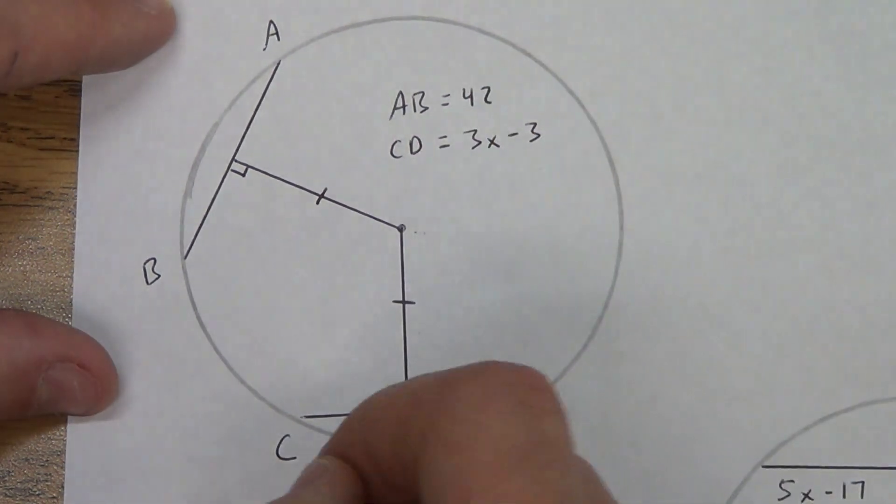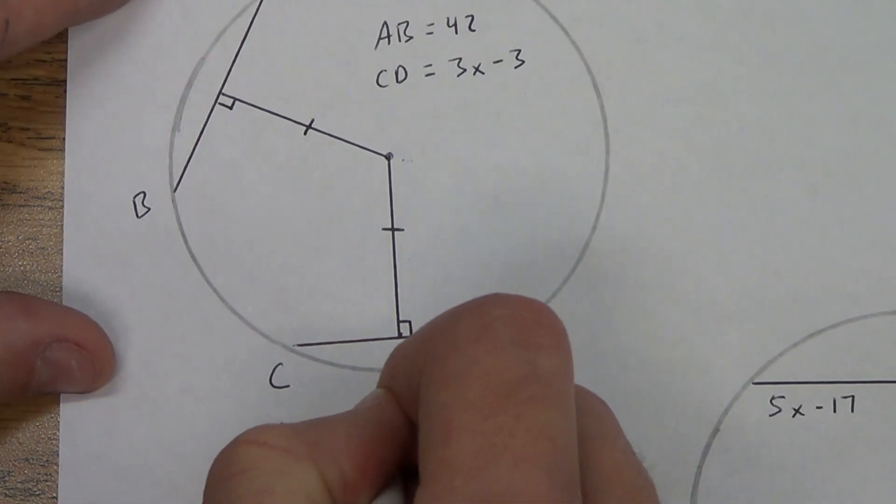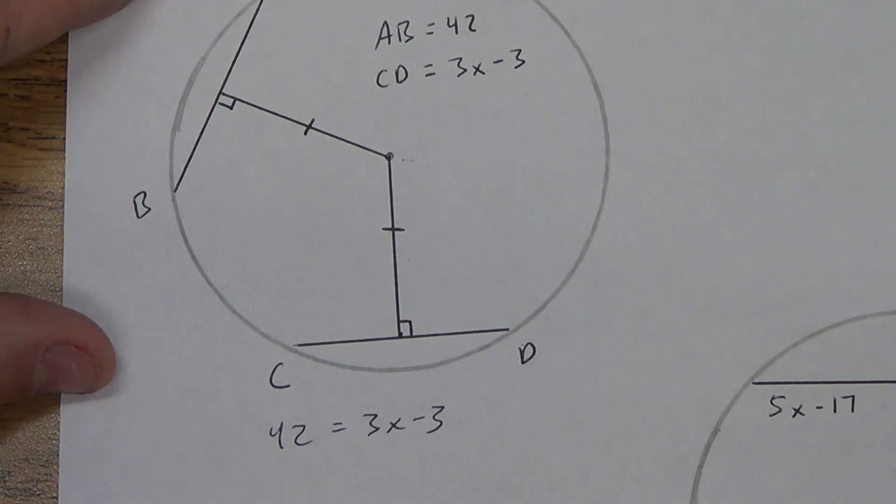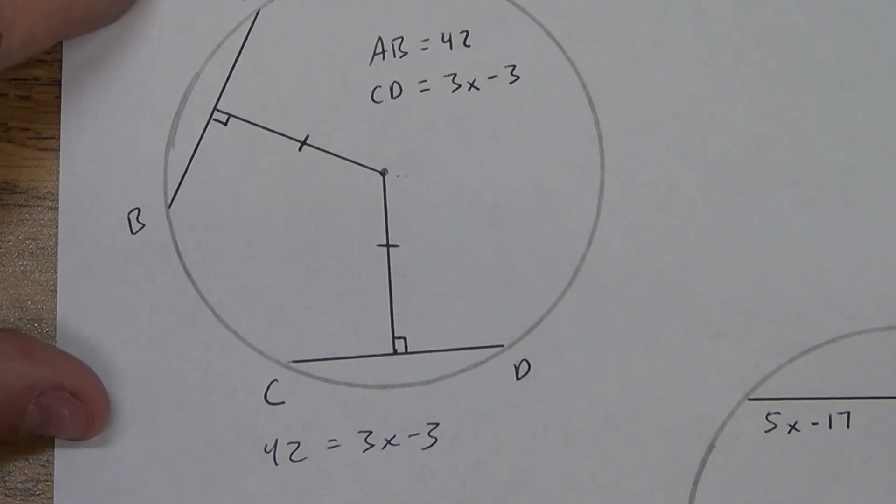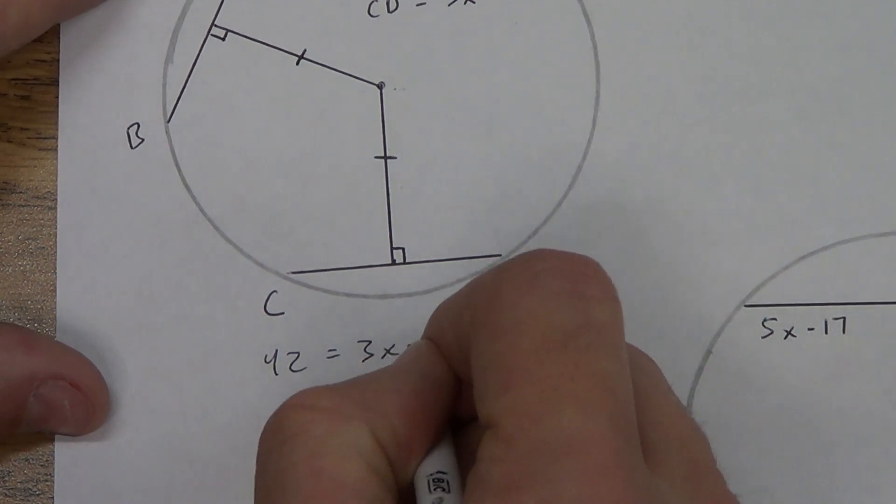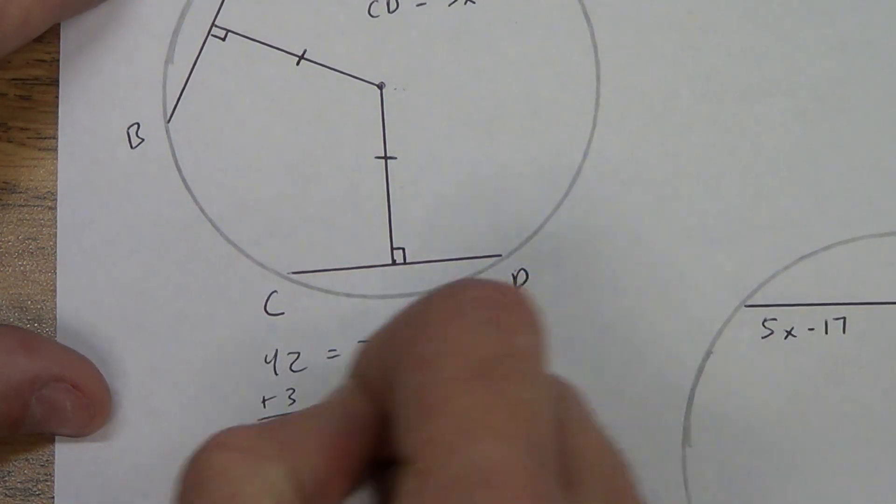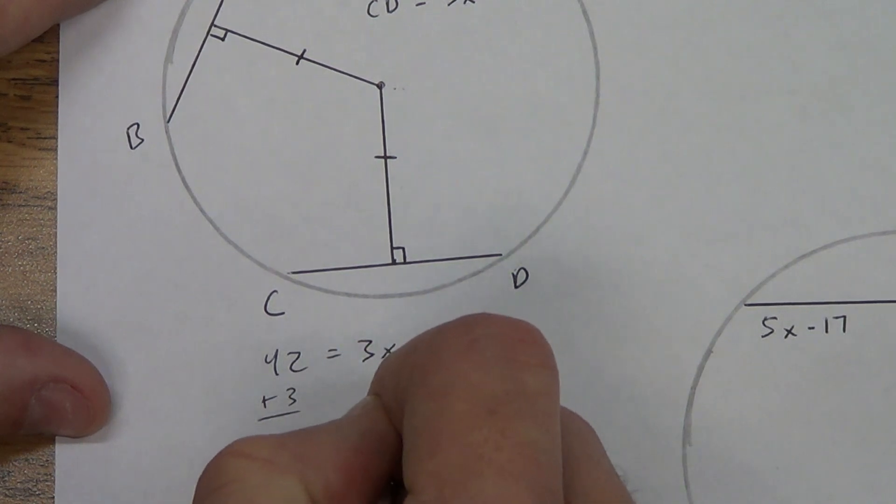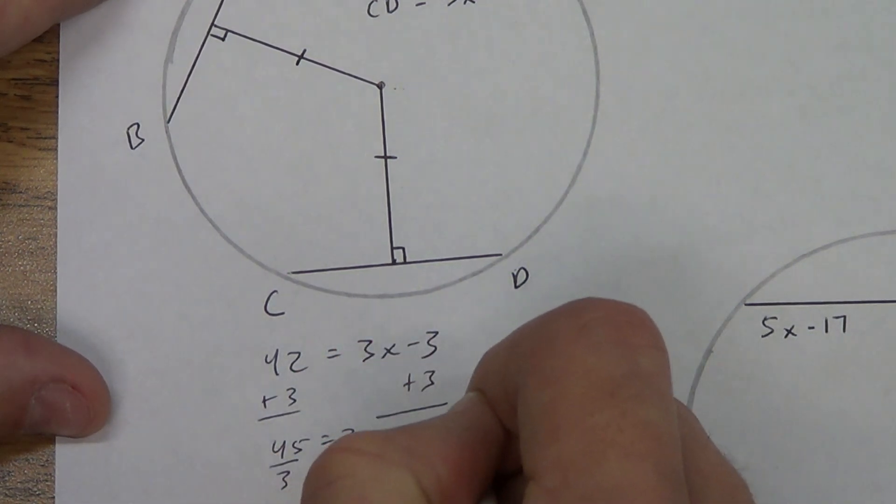So AB, which is 42, has to equal 3x minus 3. Okay? Does that make sense? And if you've got questions on this, you need to make sure you let me know. Then it's a simple algebra problem. Add 3. 45 equals 3x. Divide by 3. x equals 15.